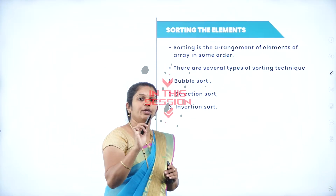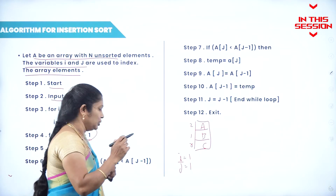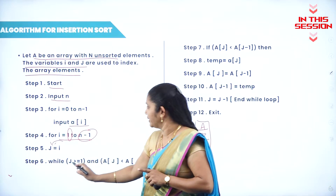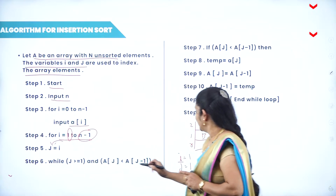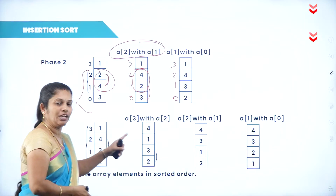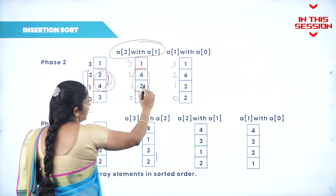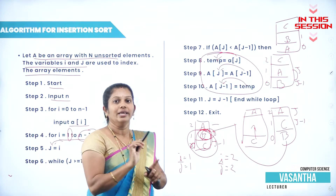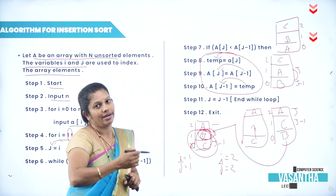Sorting is nothing but arrangement of elements in some specific order. Once we move to j, then comparison takes place. How long will it take place? While j is greater than or equals to 1, till that it has to process. In the second phase, totally we are considering 3 elements. Swapping between positions 2 and 1, then 1 and 0 takes place. If a of j is not less than a of j minus 1, then swapping will not take place — it will move to the next element.